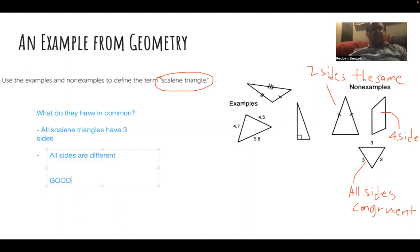So a good definition could be that a scalene triangle is a three-sided closed shape where all sides are different.